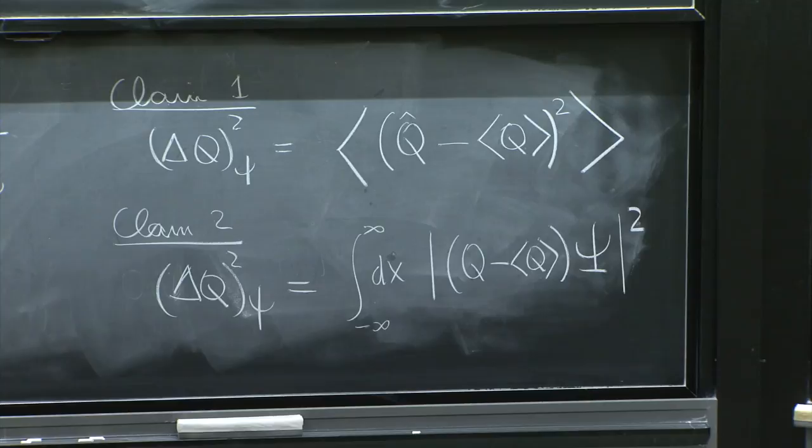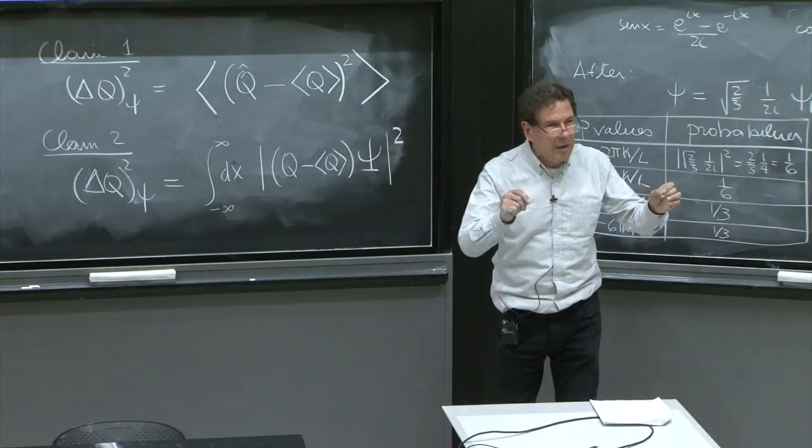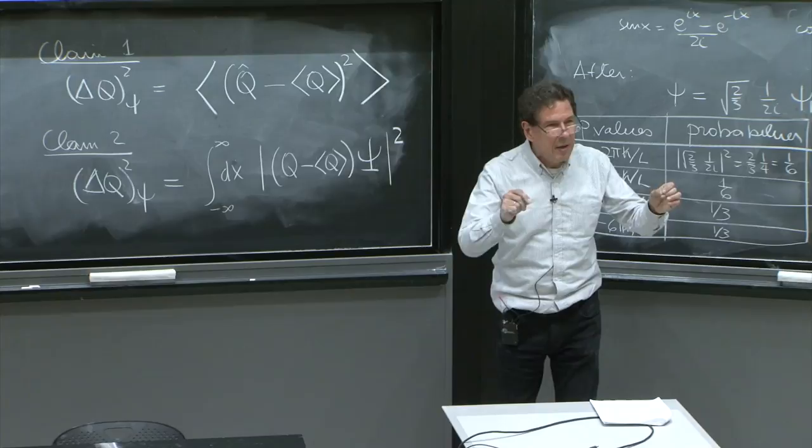We'll show these two things next time and show one more thing. That the uncertainty vanishes if and only if the state is an eigenstate of q. So if the state that you're looking for is an eigenstate of q, you have no uncertainty. And if you have no uncertainty, the state must be an eigenstate of q. And those all things will come from these claims that we'll understand next time.